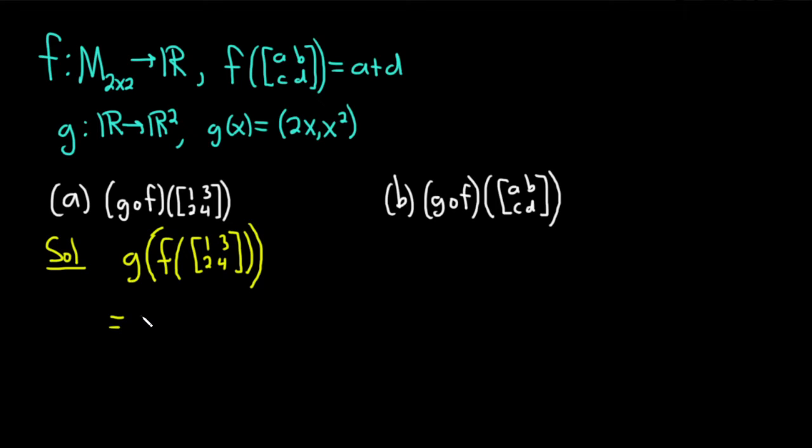This is equal to g of—so now we're going to look at f. f is basically this function that's defined up here. And again, you just add up the diagonal elements, so a plus d. So in this particular case, it's just 1 plus 4. So this is 1 plus 4. This is equal to g of 5.